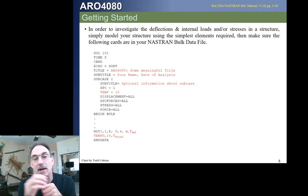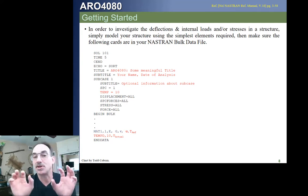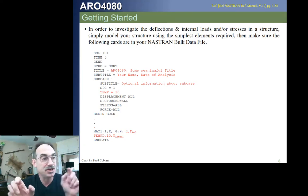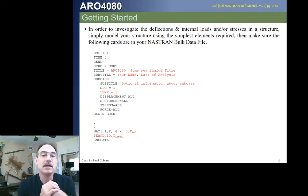If instead you use the temp card to identify the temperature at certain grid points, be sure to either call out the tempD card to call out the default temperatures, or the default temperatures will just be TREF, and those will remain at TREF. If you don't call out a temperature, it will remain at whatever temperature it was. That's how we can do it.